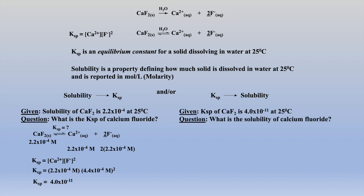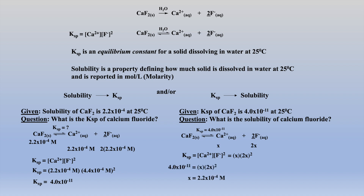Conversely, what if we were given the Ksp for calcium fluoride and asked for the solubility of calcium fluoride? Or maybe we were asked to calculate the concentrations of calcium and fluoride at equilibrium. Well, first we would write our change, place those values into the solubility expression, and solve for x. Here, x equals the solubility of calcium fluoride as well as the final equilibrium concentration of the calcium ion, and twice this value is the equilibrium concentration of the fluoride ion.